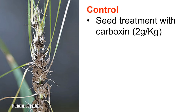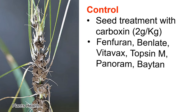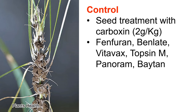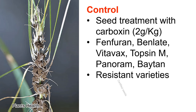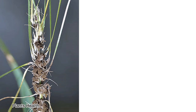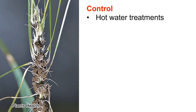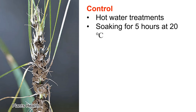We can control loose smut disease by seed treatment with Carboxin at 2 grams per 1 kilogram of seeds. Other fungicides used include Furfuran, Benlate, Vitavax, Topsin-M, Panuram, and Betten. Resistant varieties can be used, and certified seeds can also be used to control the disease.